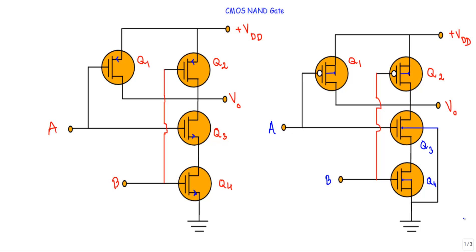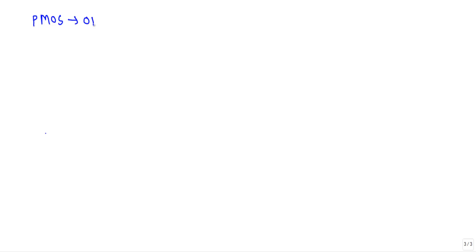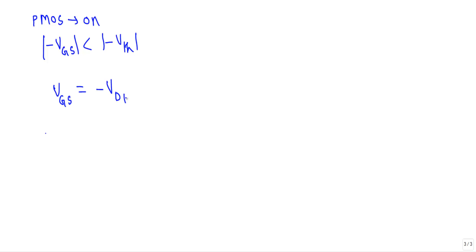A p-type MOSFET will be in ON state if I apply a negative gate-to-source voltage whose magnitude is greater than the negative threshold voltage. That means if I apply a gate-to-source voltage more negative than the negative threshold voltage, our p-type MOSFET will be in ON state. In CMOS NAND gates, I will apply a negative voltage minus VDD to specify a higher negative voltage than this negative threshold voltage.